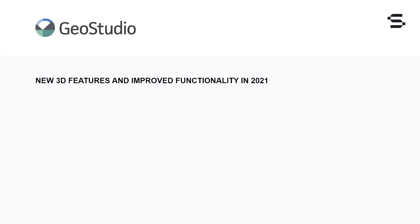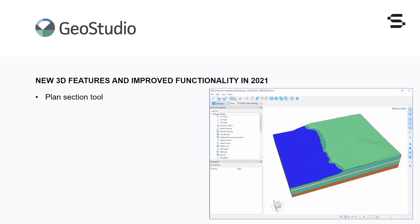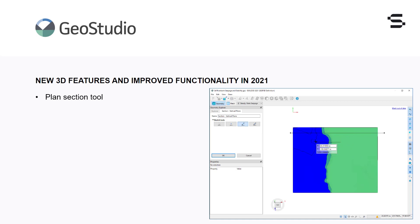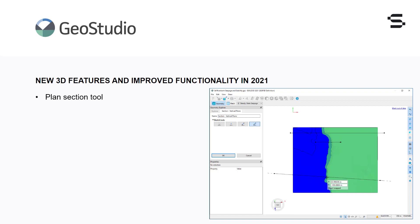GeoStudio 2021 includes multiple improvements to three-dimensional capabilities. The new Plan Section tool allows for the creation of sections while in plan view, with infinite and finite length lines. Finite lines can be drawn to create a section through only a portion of the domain, while infinite lines automatically cut through your entire model domain. Lines can be constrained so they are perpendicular to existing features on the plan view, allowing for straightforward creation of 2D cross-sections along defined features like a road cut or open pit face.